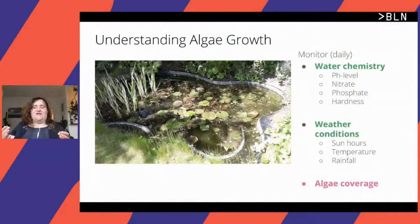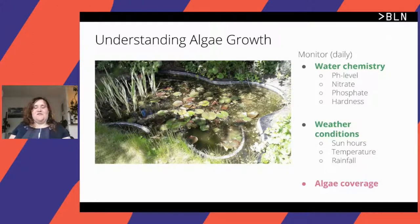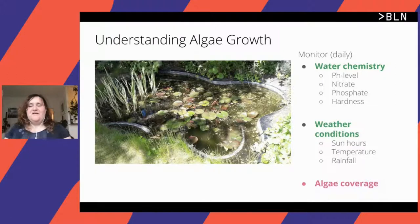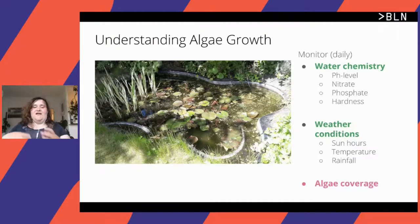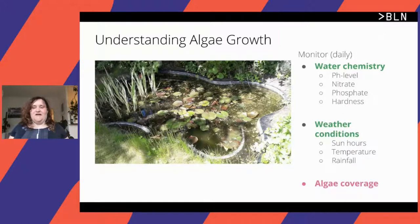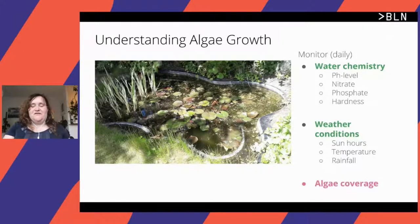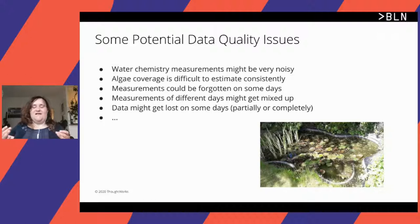I thought I could turn this into a data science or analytics challenge — looking at the different factors that contribute to algae growth, like water chemistry and weather conditions, and correlating them to algae coverage to figure out which factors are particularly driving the growth. I might monitor things like pH level, nitrate, phosphate, and water hardness, as well as sun hours per day, temperature, and rainfall, and then measure what portion of the pond is covered in algae.